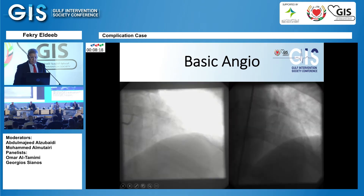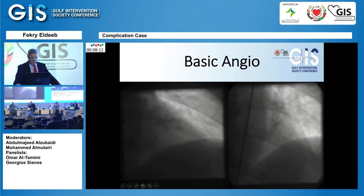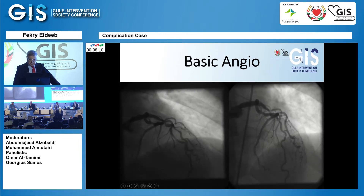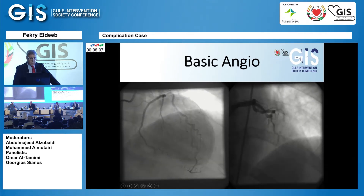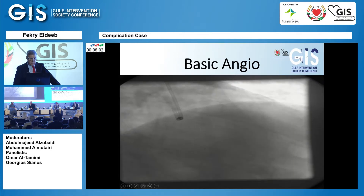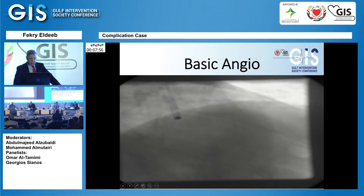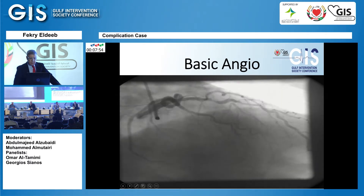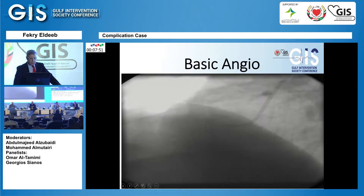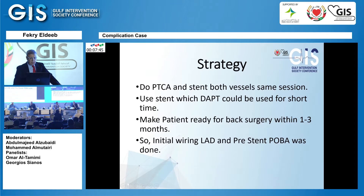This is the baseline angiogram. You can see there is a complex LAD lesion — shown here in different views — it's a complex, multiple narrowing, long lesion with a lot of overlap from other vessels. This is probably the best view; you can see the extension of the lesions. She also had a mid-segment significant right coronary artery lesion.